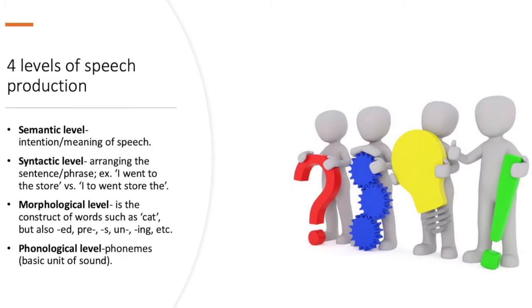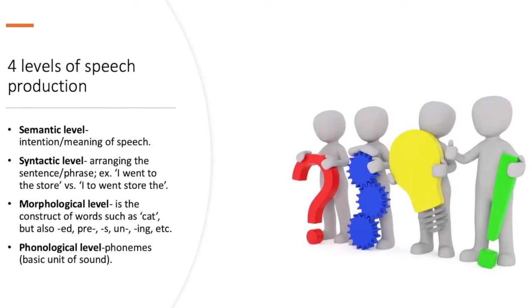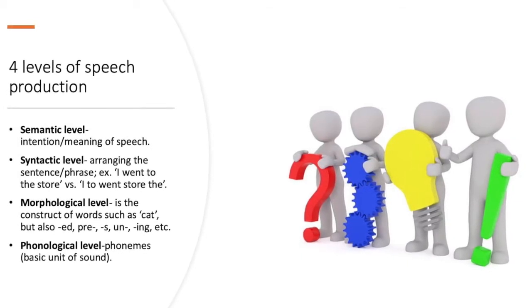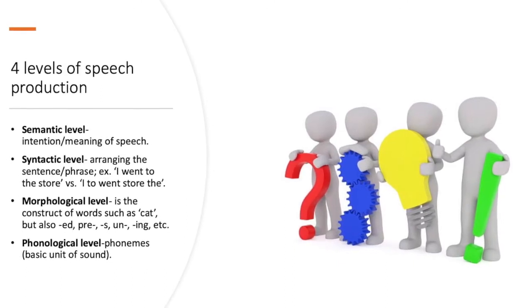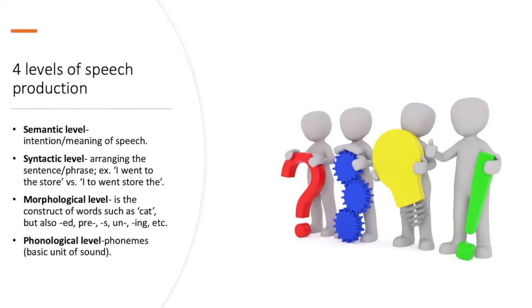Four levels of speech production. These include semantic level, whereby it conveys the intention or meaning of the speech. Syntactic level, which is arranging the sentence or phrase. For example, I went to the store versus I went, I too went store the. So this is grammar, basically.